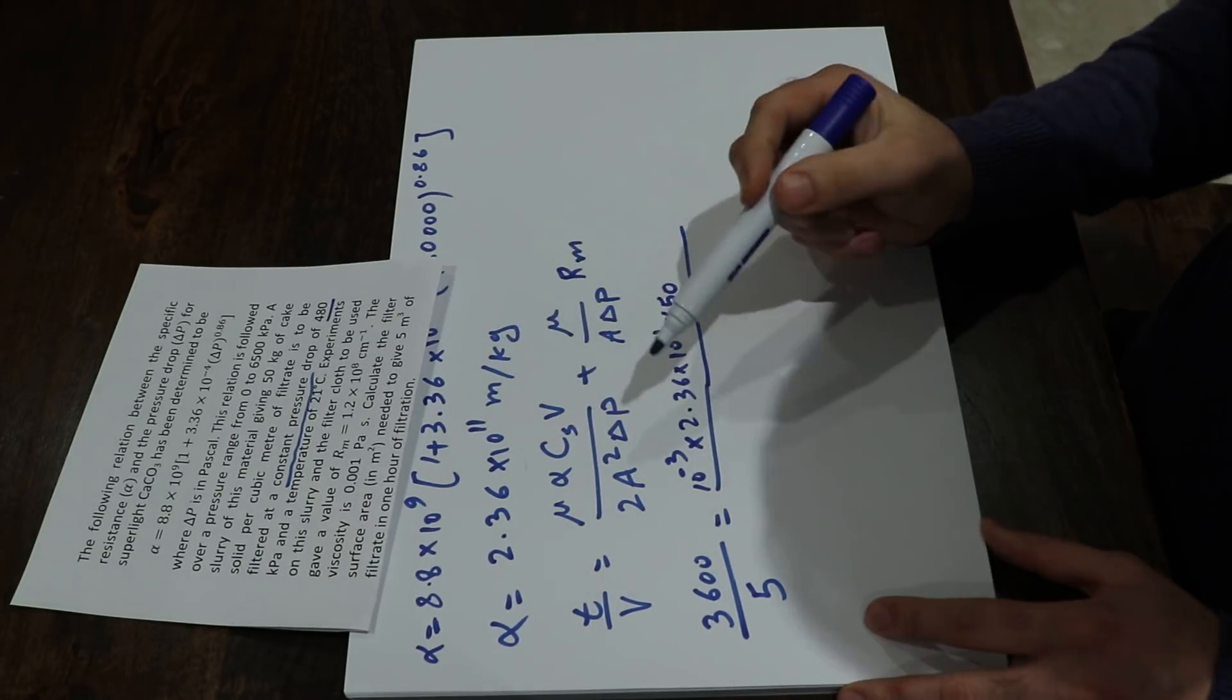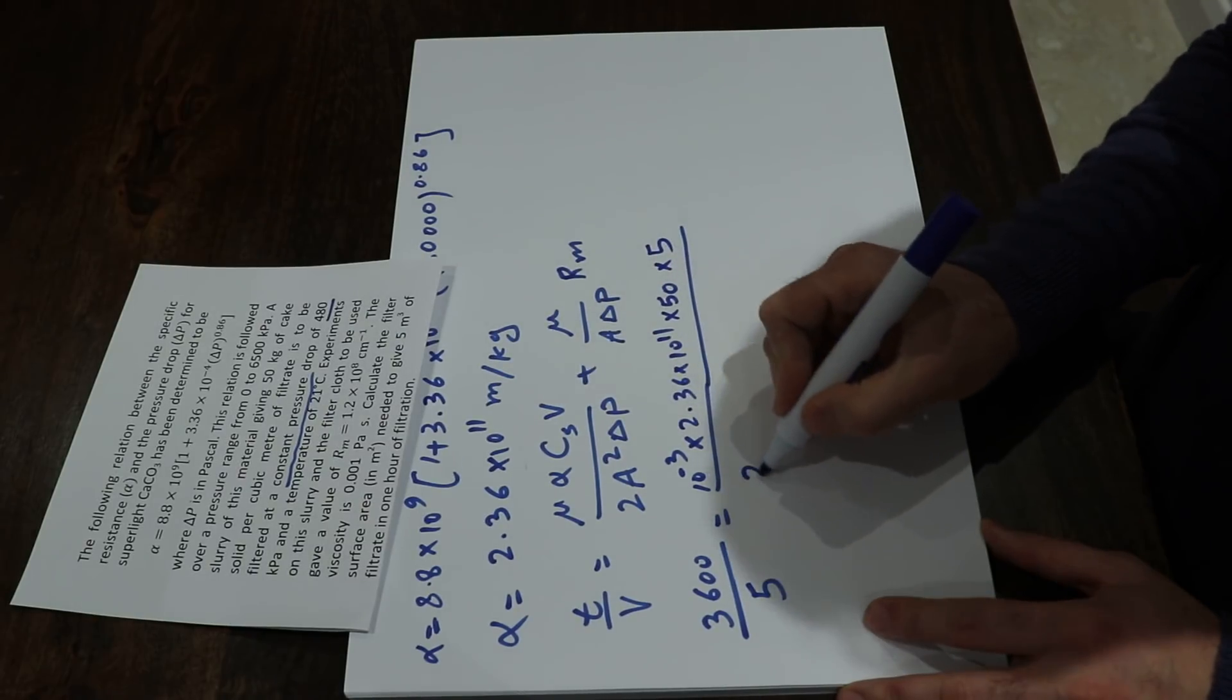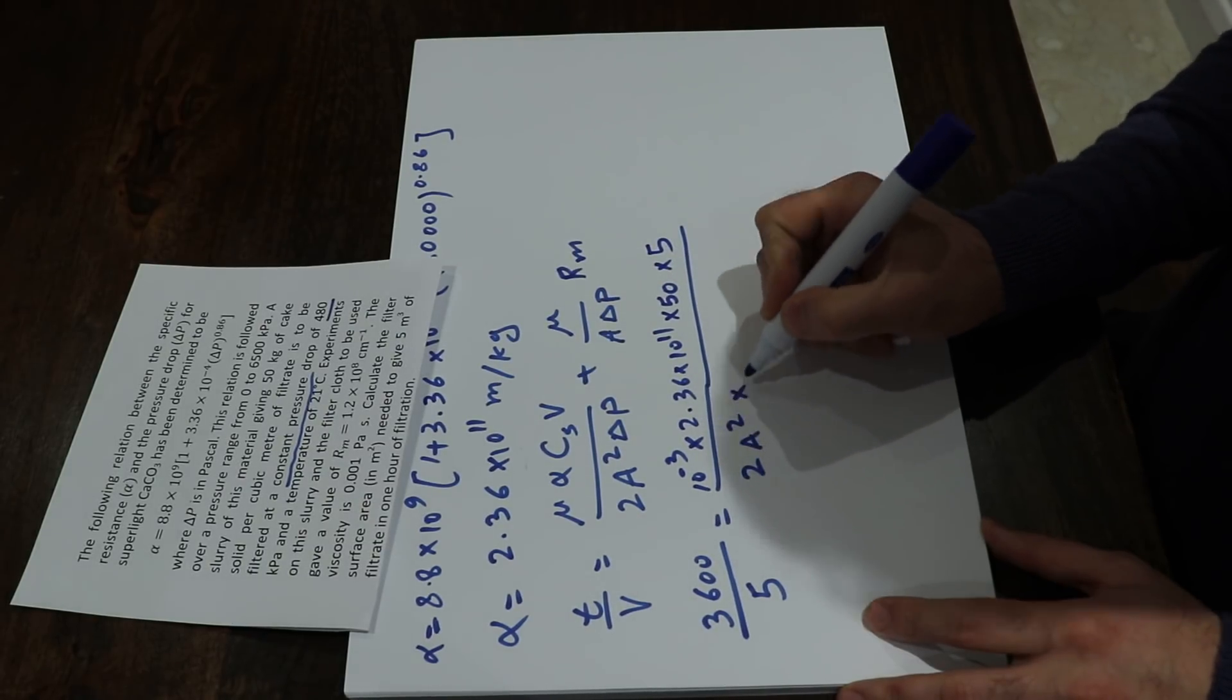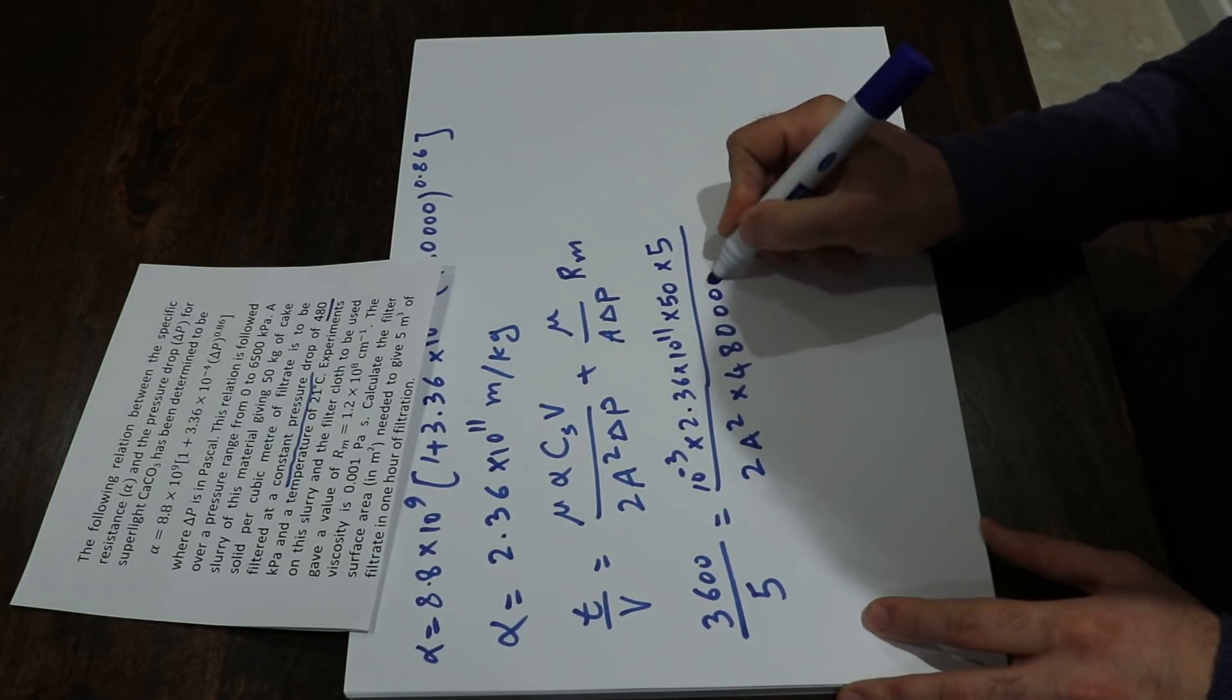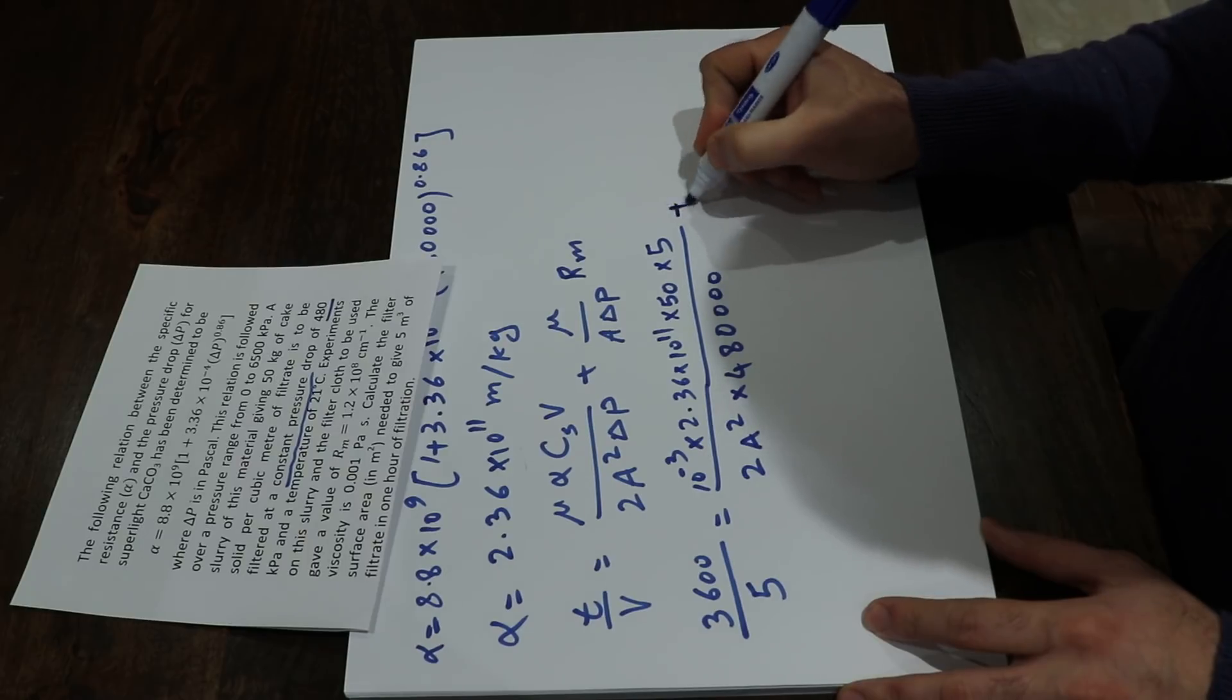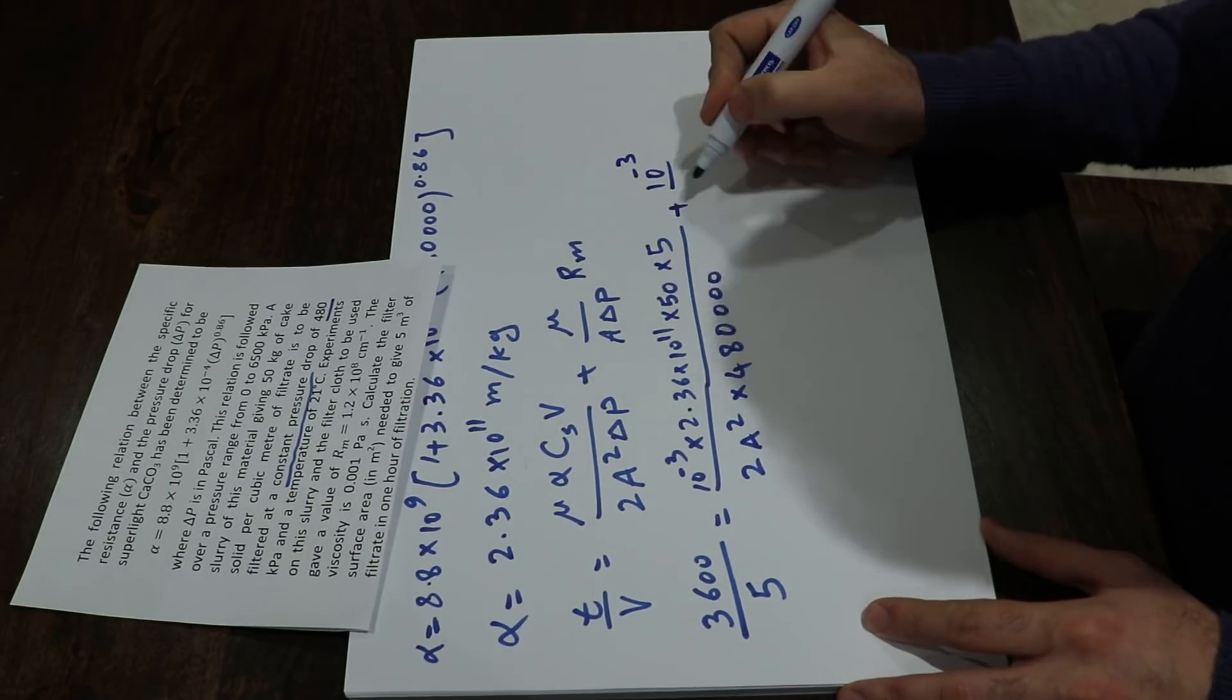Divided by 2 times a squared times delta P, that is 480,000, plus mu, that is 10 to the minus 3, divided by A, which is unknown, times delta P, that is 480,000.